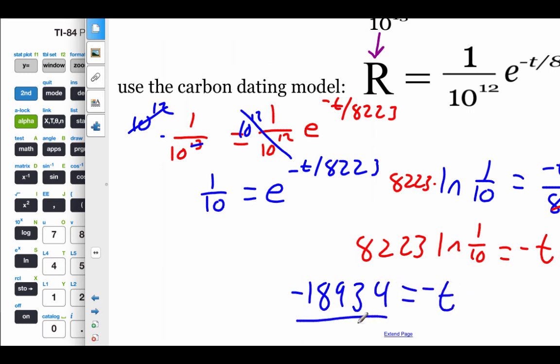So if we want to get rid of these negatives, we're just going to divide both sides by negative 1. So this fossil that we found is approximately 18,934 years old.